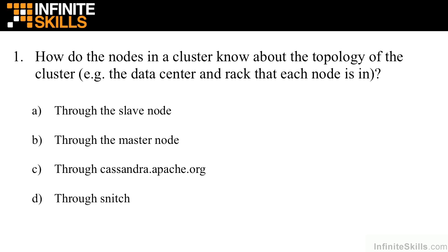A, through the slave node. B, through the master node. C, through Cassandra.apache.org. Or D, through Snitch. I bet you chose D, through Snitch — and that is correct.